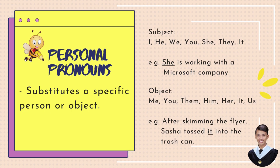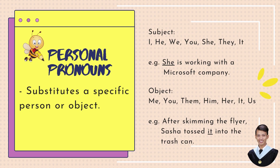For example: She is working with a Microsoft company. This sentence is using 'she' as a substitute for a specific name of a girl. Instead of 'Jane,' which is a specific name of a girl, is working with a Microsoft company — the sentence uses 'she.'